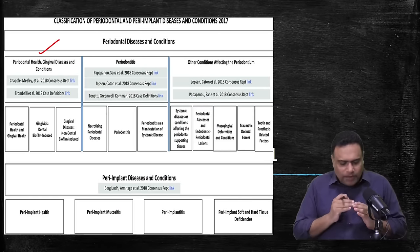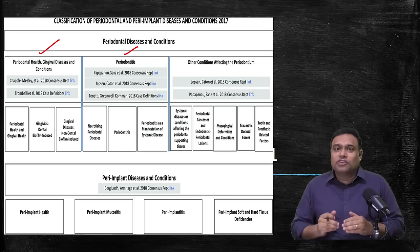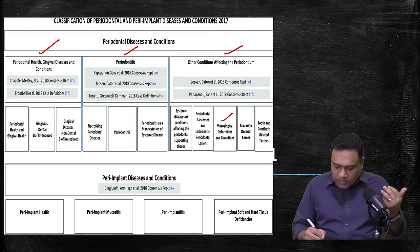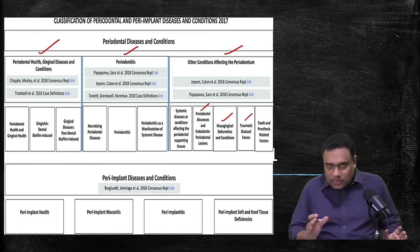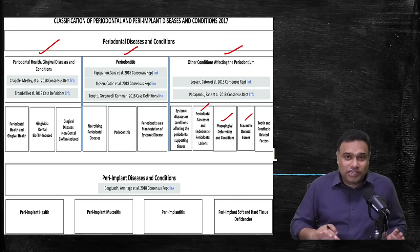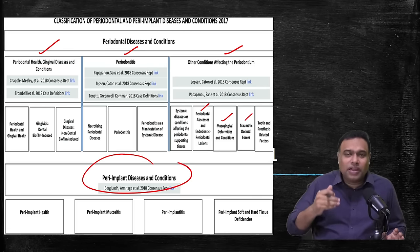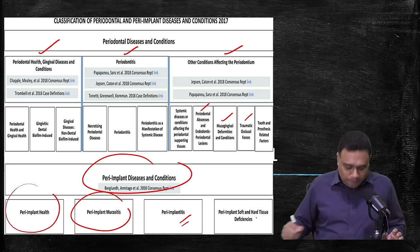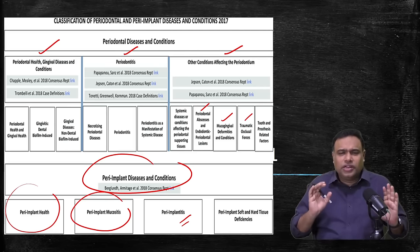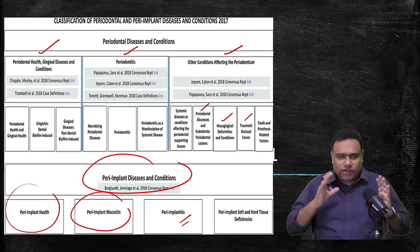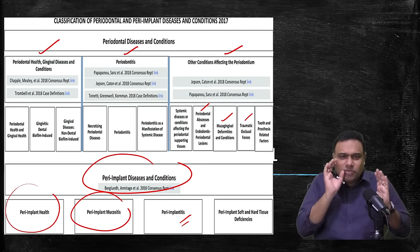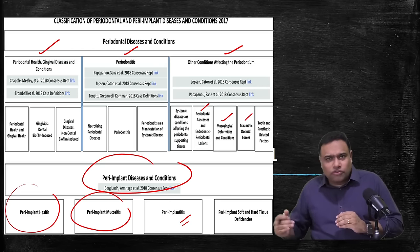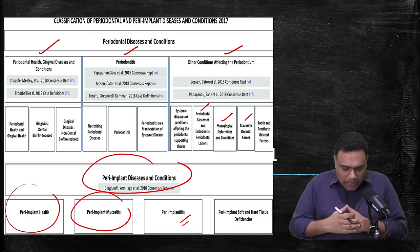The classification includes: periodontal health and gingival health; periodontitis — where aggressive periodontitis also falls; other conditions affecting the periodontium such as mucogingival deformities, periodontal abscesses, traumatic occlusal forces; and a new category — peri-implant diseases. Peri-implant diseases include: peri-implant health (implant is healthy, minimal inflammation), peri-implant mucositis (inflammation without bone loss, like gingivitis), peri-implantitis (bone is involved), and peri-implant soft and hard tissue deficiencies (too much bone and soft tissue loss).